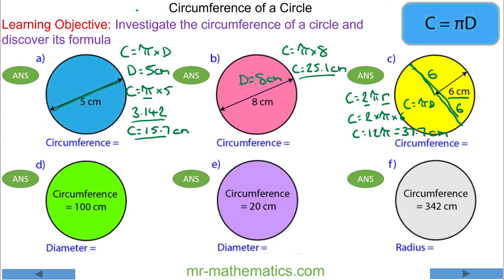For question d, we're going to use the same formula: circumference equals pi times diameter. But this time we'll work out the diameter when you've been given the circumference. So we're going to make the diameter the subject of the formula by dividing both sides by pi.